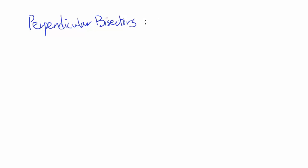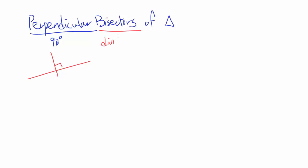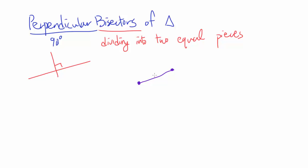So what is a perpendicular bisector? Perpendicular means it is 90 degrees with respect to something — so a line is perpendicular because it is intersecting at 90 degrees. And bisector means you are dividing into two equal pieces. So given a segment, the perpendicular bisector has to go through the midpoint to divide it in two, and it has to be perpendicular to that segment.